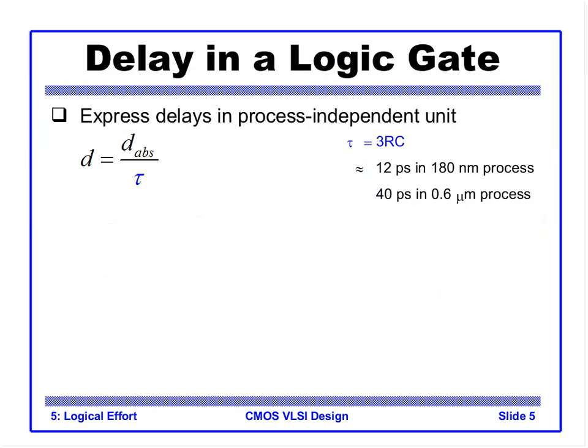We express delay in a process-independent unit. We introduce a time constant tau equal to 3RC — a technology-dependent parameter, about 12 ps in 90 nm and about 40 ps in 250 nm. The absolute delay divided by tau gives us the logical delay d, which is technology-independent.